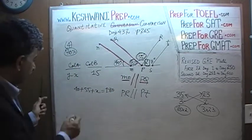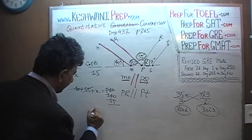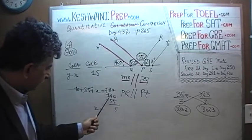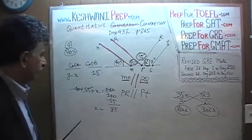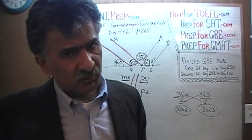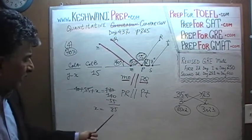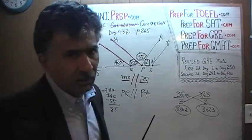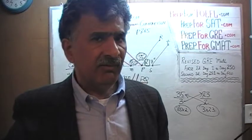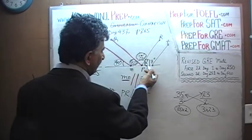Subtracting 40 from both sides gives 140, then subtracting 55 gives us X. X equals 140 minus 55. Now, 140 minus 50 would be 90, therefore 140 minus 55 is 5 less than that — 85. I prefer to think about it that way because doing it too mechanically increases the chance of making a mistake. So X equals 85.